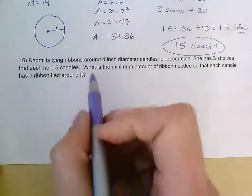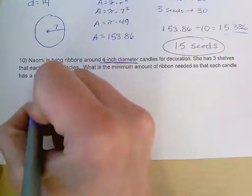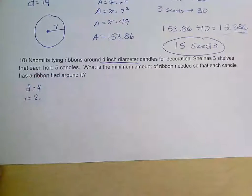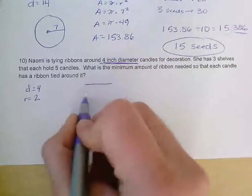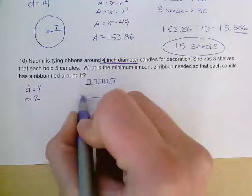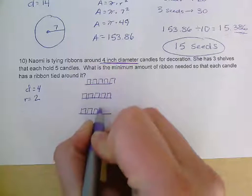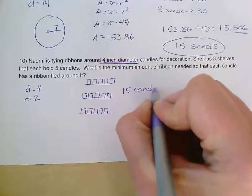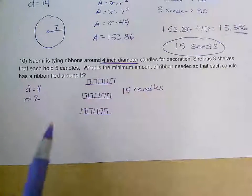So a couple different things I noticed here. She's tying the ribbons around four-inch diameter candles. So that means that the diameter is equal to four. That means that the radius is equal to two, because the radius is half the diameter. I also noticed she has three shelves that each hold five candles. So I'm just going to draw that out. Here are my three shelves, and each one can hold five candles. This means there are a total of 15 candles, or we could have just taken five times three, but I want to see that visual there.